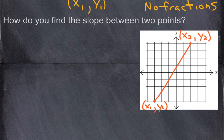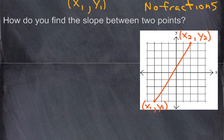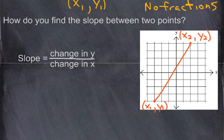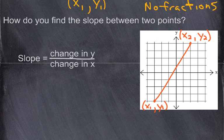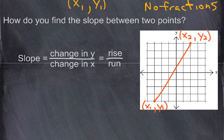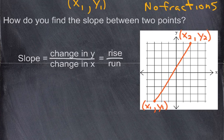If I have two points — x1, y1 at the bottom and x2, y2 at the top — slope is your change in y over the change in x values. A lot of people use the phrase rise over run: you rise up and down, you run left and right. So again, change in y over the change in x, or rise over run.